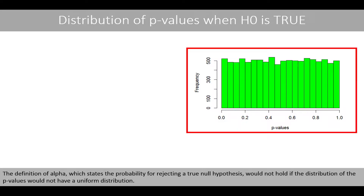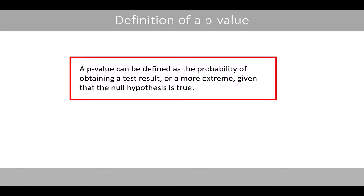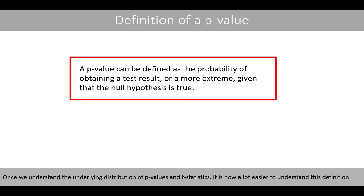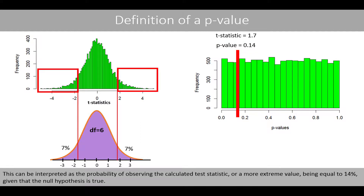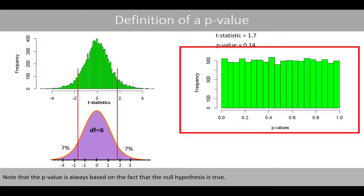The definition of alpha, which states the probability for rejecting a true null hypothesis, would not hold if the distribution of the p-values did not have a uniform distribution. A p-value can be defined as the probability of obtaining a test result, or a more extreme result, given that the null hypothesis is true. Once we understand the underlying distribution of p-values and t-statistics, it is now a lot easier to understand this definition. Suppose that we have run a two-sided statistical test and have got a p-value of 0.14. This can be interpreted as the probability of observing the calculated test statistic or more extreme value being equal to 14%, given that the null hypothesis is true. Note that the p-value is always based on the fact that the null hypothesis is true.